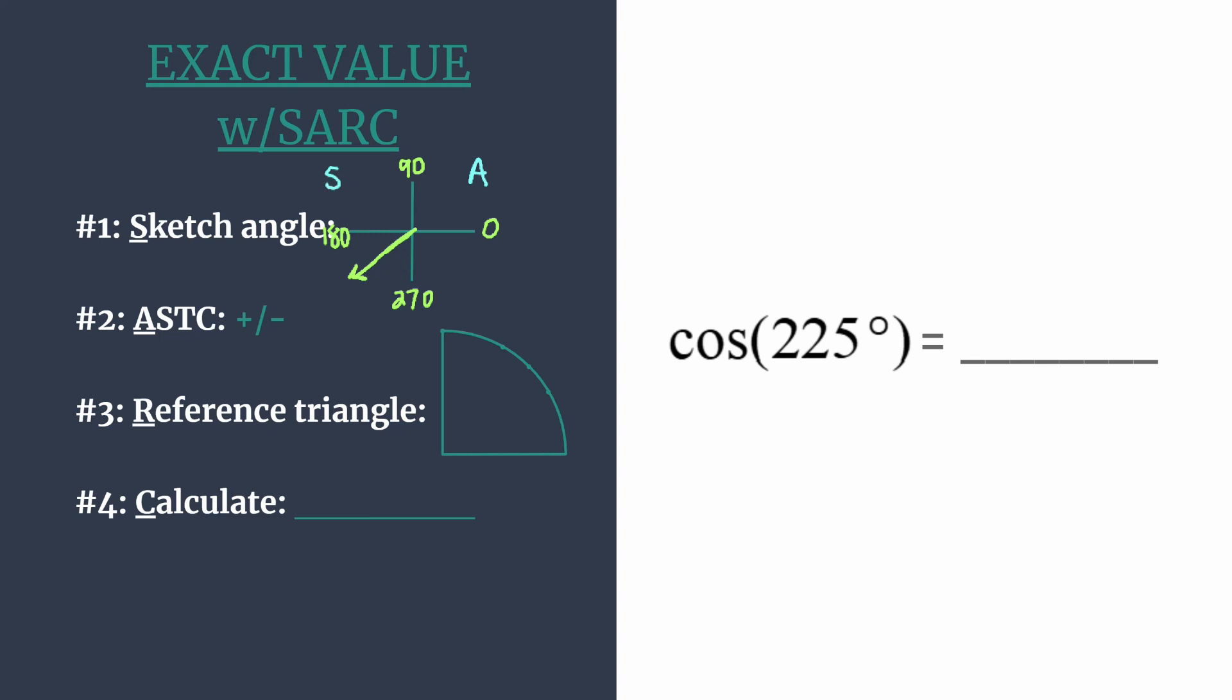The S stands for sine, and its reciprocal cosecant will be positive in quadrant two. In quadrant three, tangent and cotangent are positive. And in four, cosine and secant would be positive.